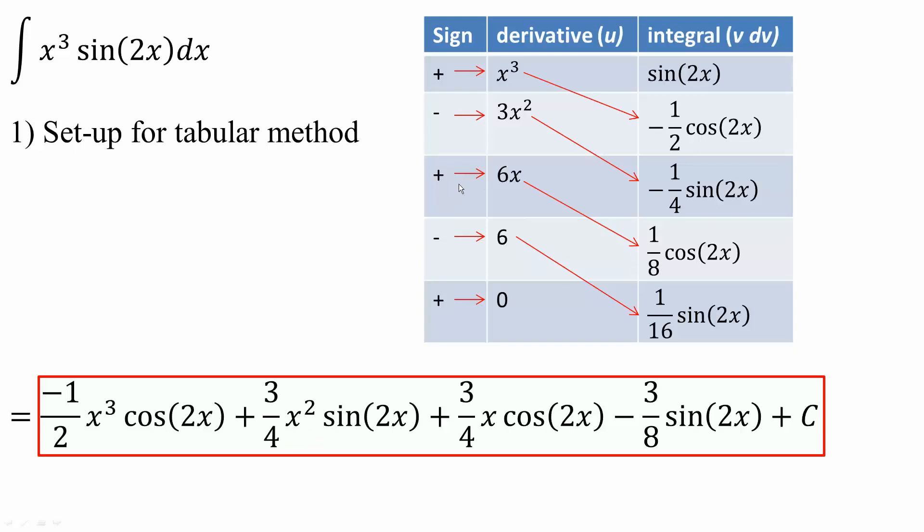Next, we say positive 1 times 6x times this piece, and we get 3 over 4 x cosine 2x. And finally, we get negative 1 times 6 times this piece, and we get negative 3 over 8 sine 2x, plus c. That's all we need to do for this problem.